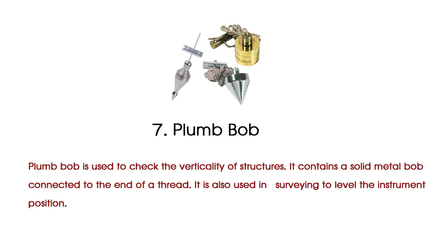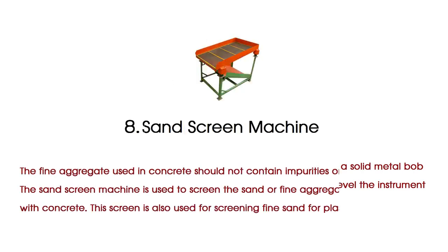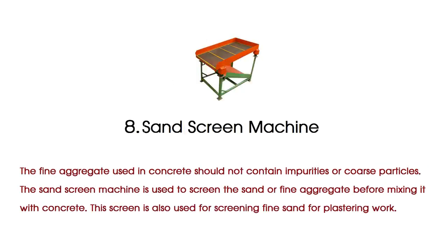The fine aggregate used in concrete should not contain impurities or coarse particles. The sand screen machine is used to screen the sand or fine aggregate before mixing it with concrete. This screen is also used for screening fine sand for plastering work.